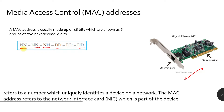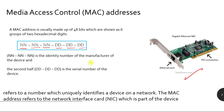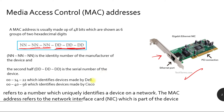As you can see, each group consists of two hexadecimal digits — six groups in total. The first three groups identify the manufacturer of the device; every manufacturer has its own unique manufacturer number. The second three groups represent the serial number of the device. For example, Dell computers have the hexadecimal manufacturer value 00-14-22, while Cisco devices have the value 00-40-96.